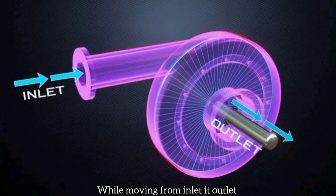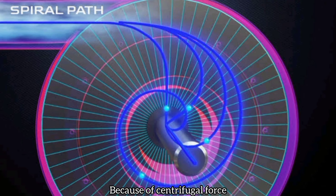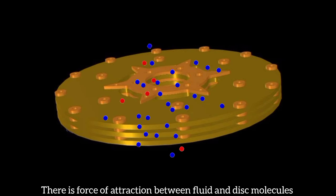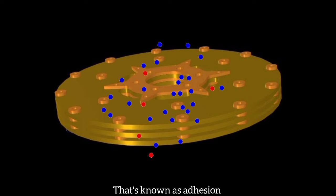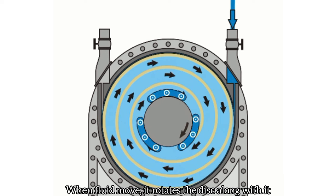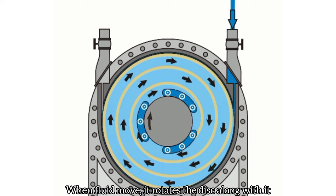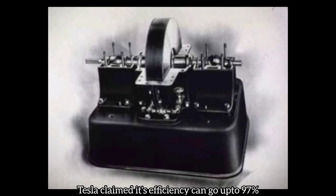While moving from inlet to outlet, the fluid molecules get spread all over the disk because of centrifugal force. There is a force of attraction between fluid molecules and the disk molecules, that is known as adhesion. Because of this adhesion force, when fluid moves, it moves the disk along with it. Tesla claimed its efficiency can go up to 97%.